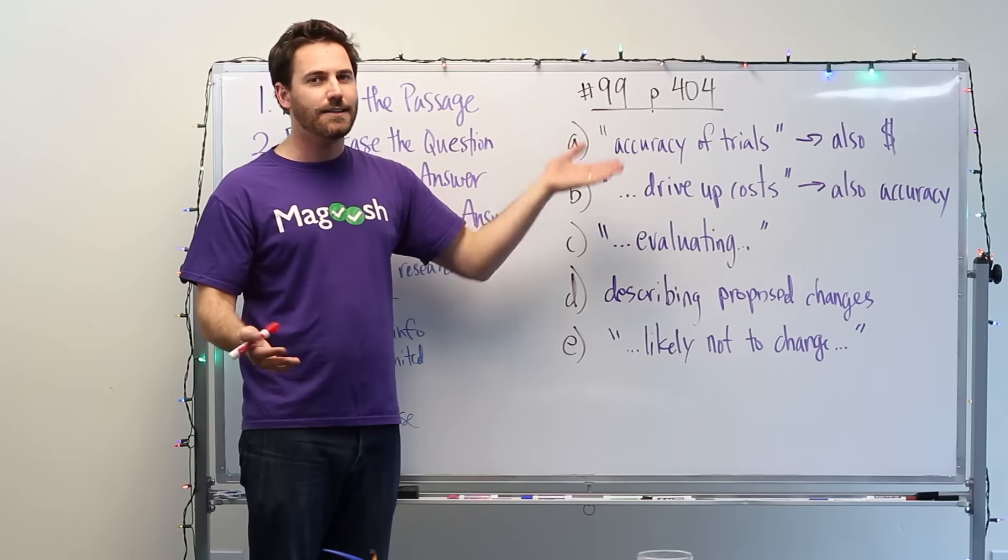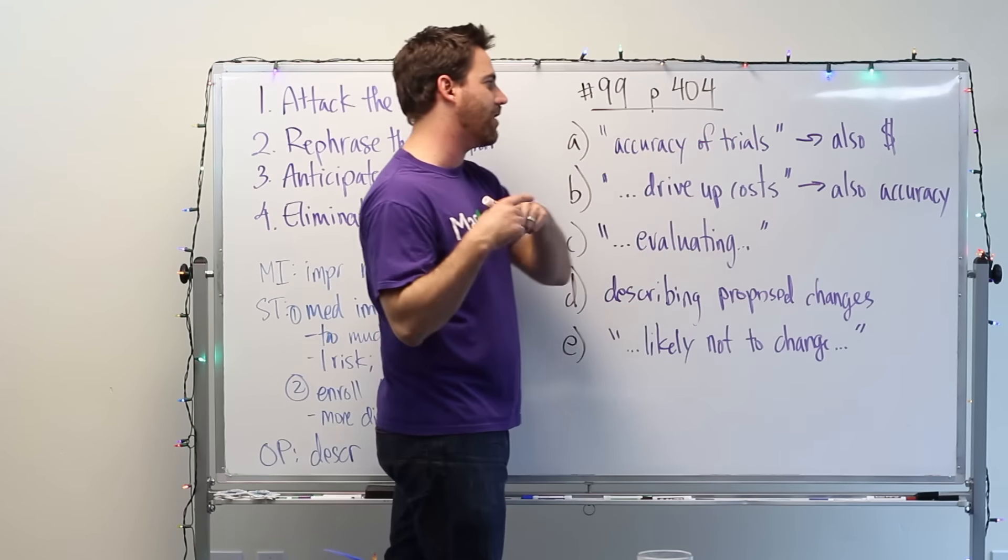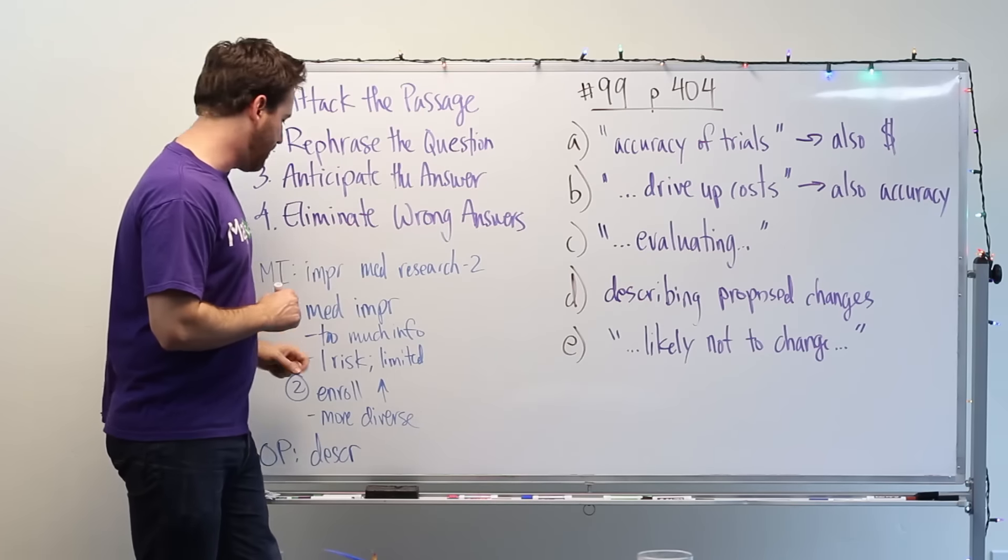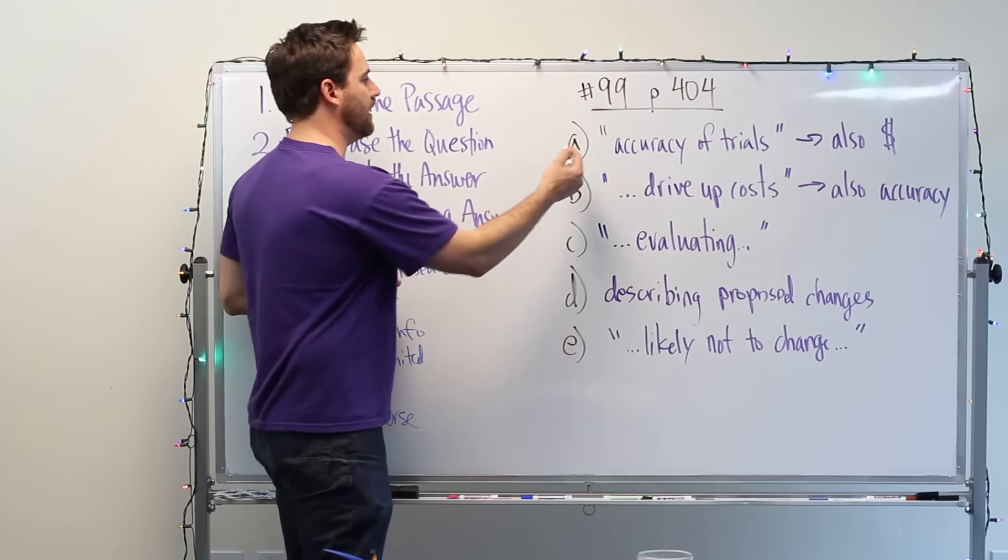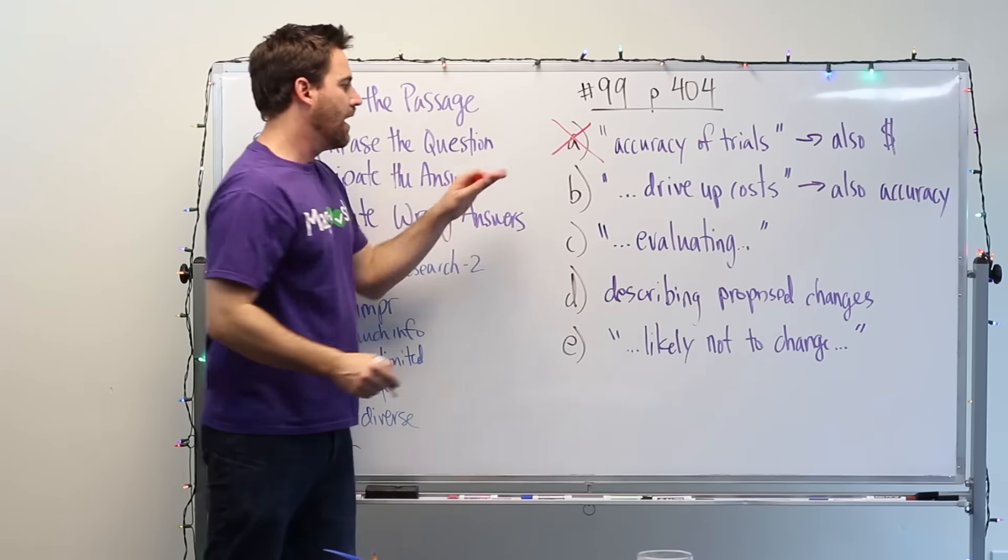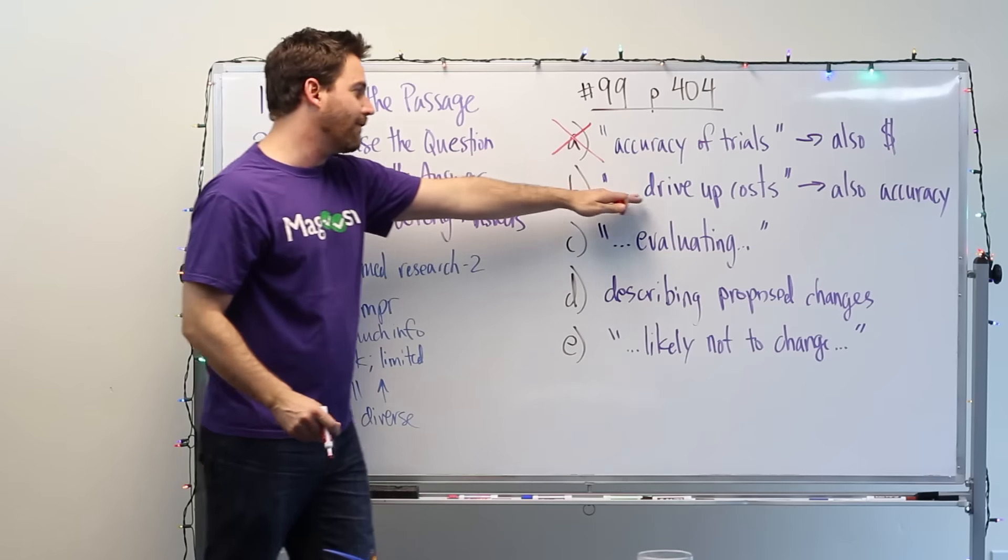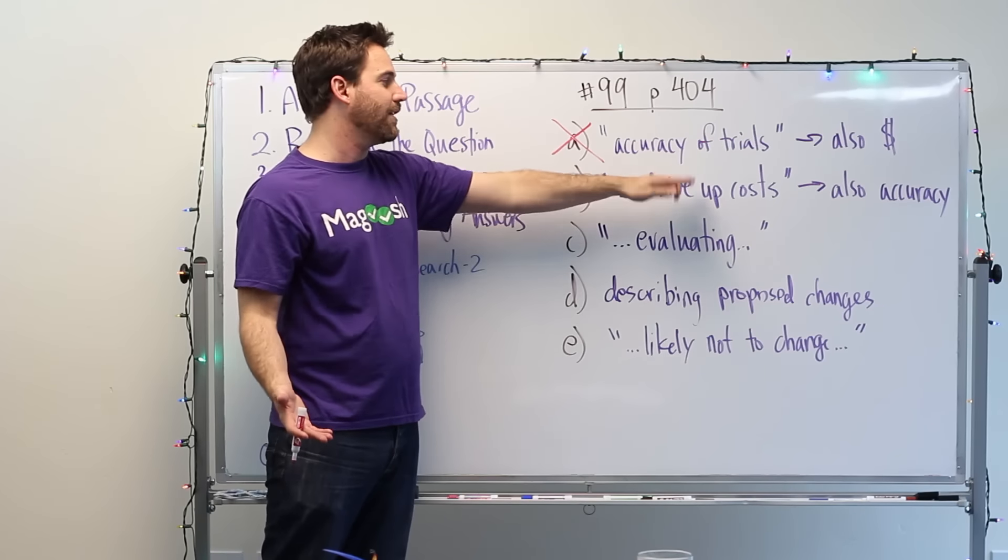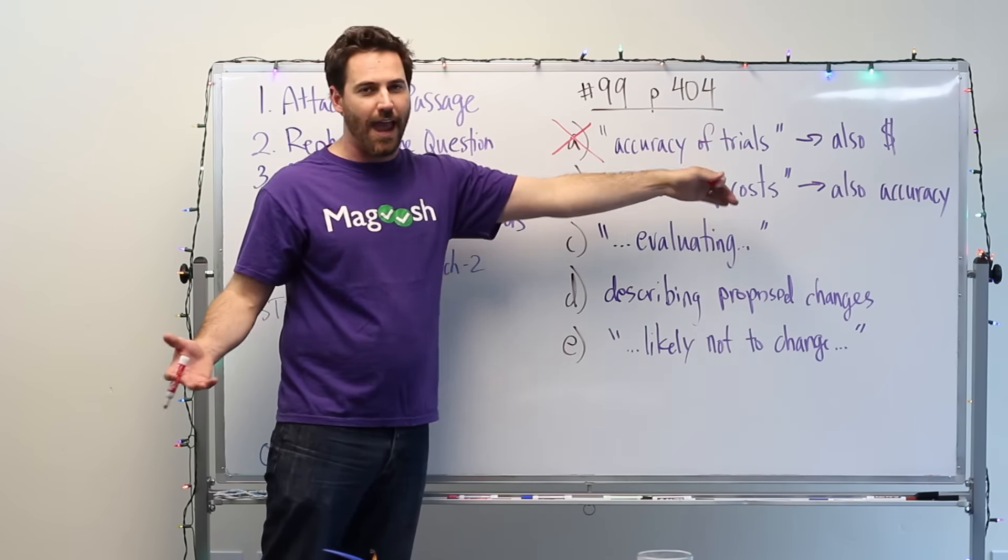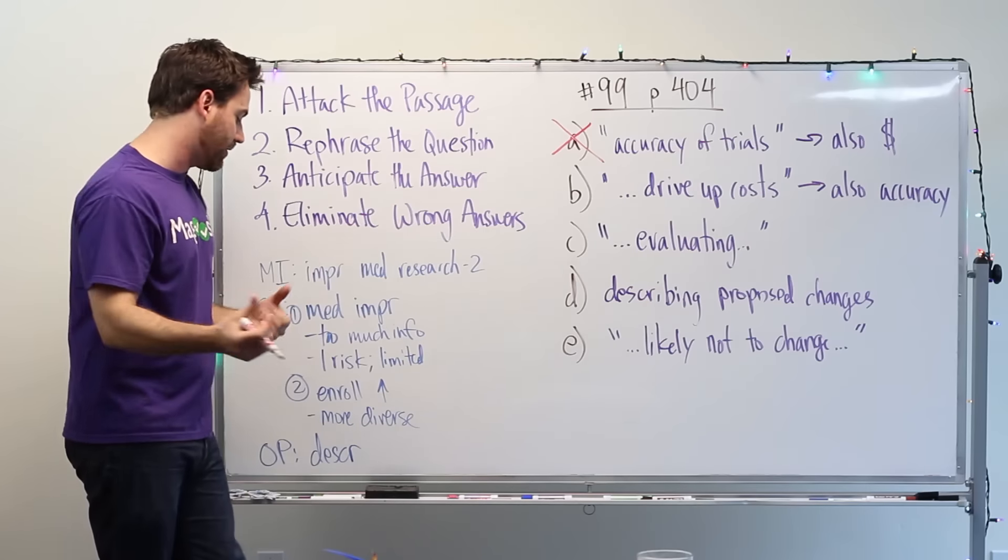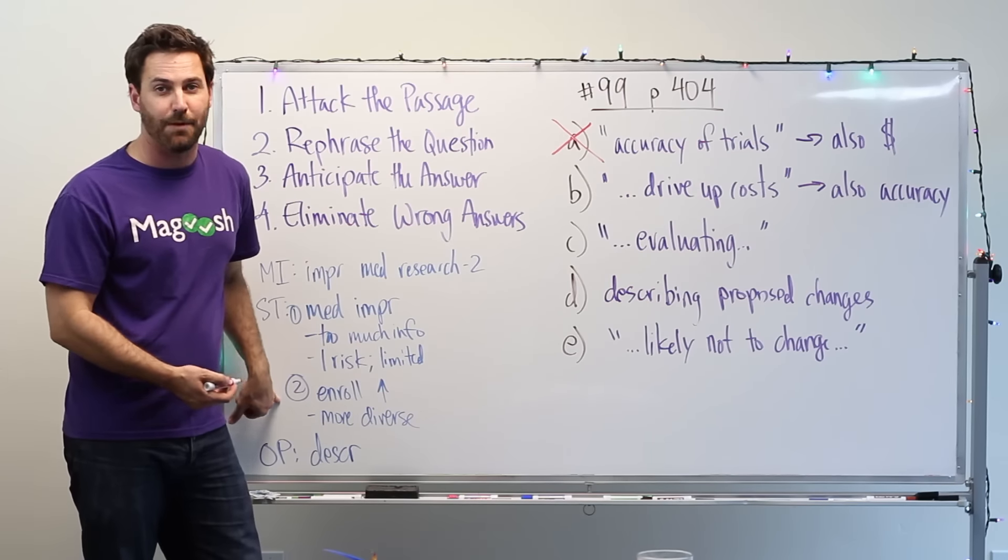Accuracy of the trials is mentioned, but they leave out also the cost of the trials, which is mentioned in paragraph one. So we can easily eliminate A. B here is drive up costs, which is mentioned, but they don't have any mention of improving the accuracy. So the passage also talks about that. And that's in paragraph two.